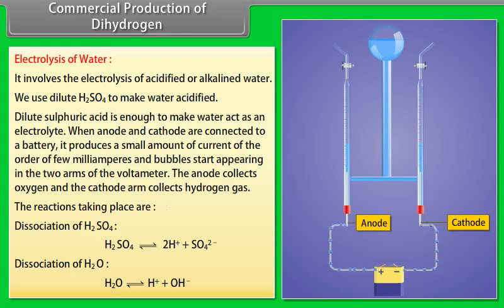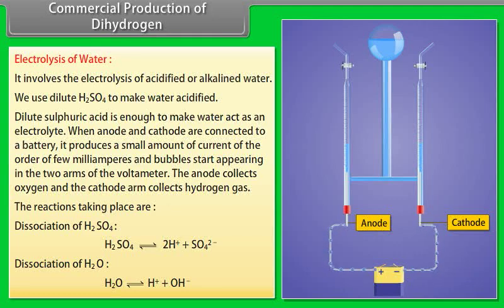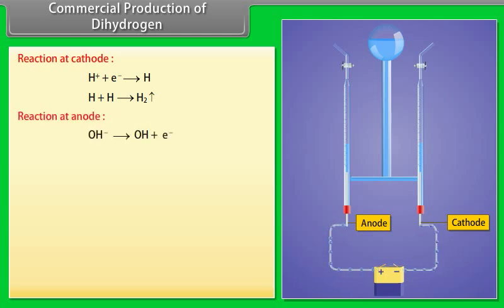The reactions taking place are: Dissociation of H2SO4: H2SO4 gives 2H+ plus SO4 2-. Dissociation of H2O: H2O gives H+ plus OH-. Reaction at cathode: H+ plus electron gives H. H plus H gives H2. Reaction at anode: OH- gives OH plus electron. 4OH gives H2O plus O2. Overall reaction: 2H2O gives 2H2 plus O2.